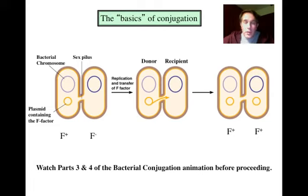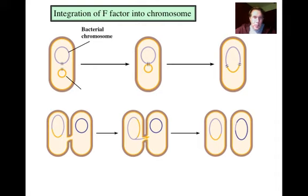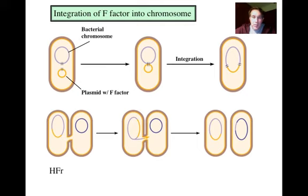Now that you've watched parts three and four of bacterial conjugation, you saw something a little different — the F-factor can actually get incorporated into the chromosome. On the diagram on the left, we have the bacterial chromosome in purple and a plasmid with the F-factor. But instead of just transferring the plasmid, sometimes the plasmid can actually be integrated into the bacterial chromosome itself. When that's the case, you get something known as an HFR — high-frequency recombinant cell.